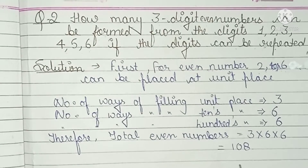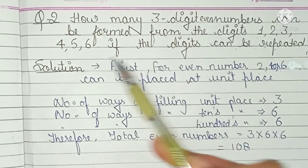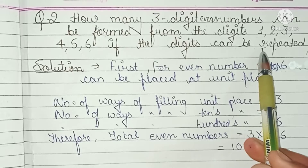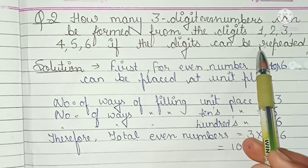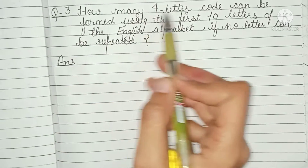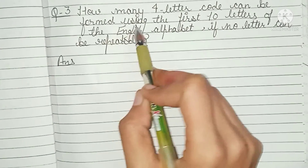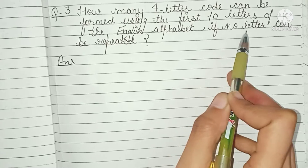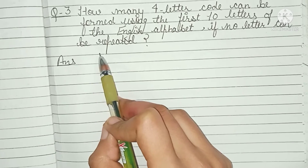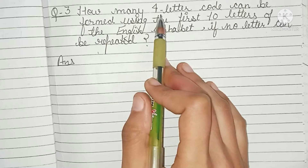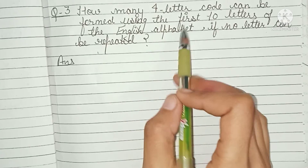It means there are total 108 even numbers that can be formed from 1 to 6 when repetition of the digit is allowed. Question number 3: How many 4-letter codes can be formed using the first 10 letters of the English alphabet if no letter can be repeated?